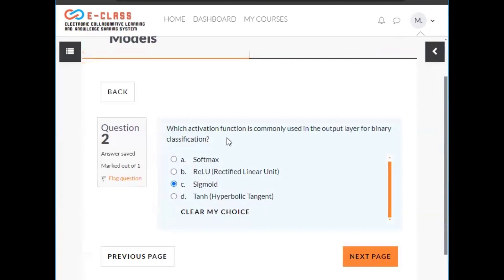Which activation function is commonly used as the output layer for binary classification? Sigmoid.